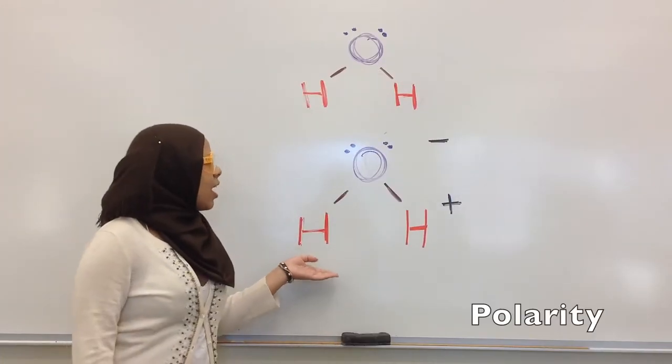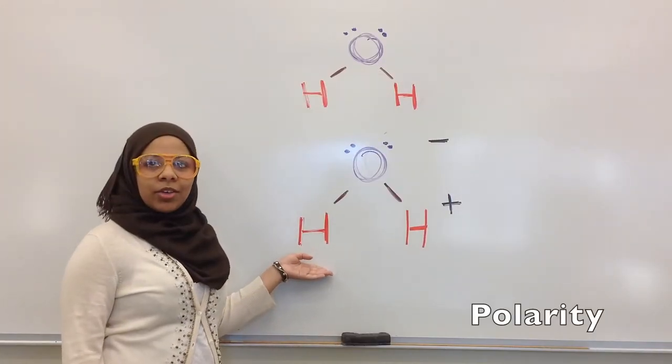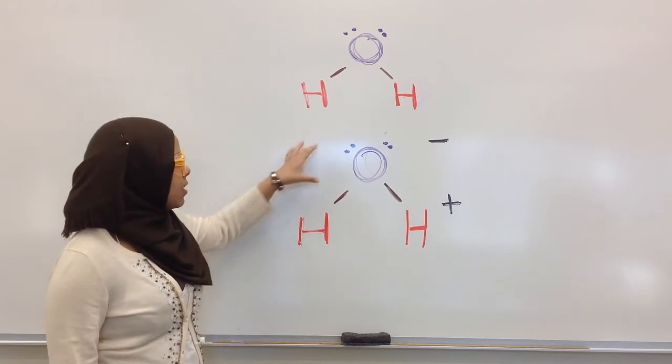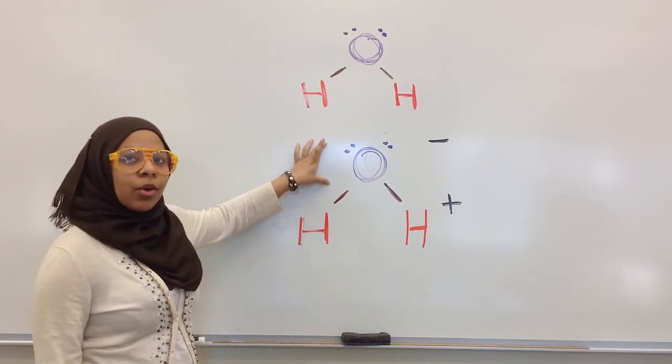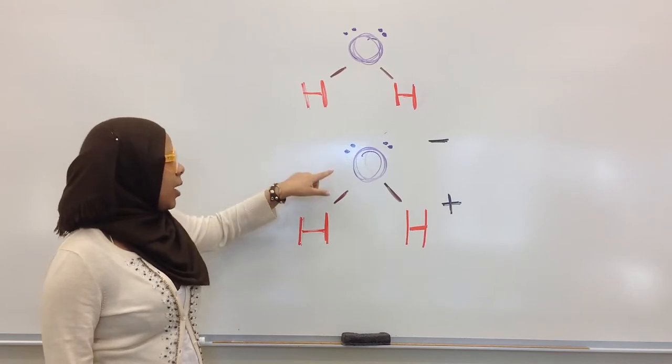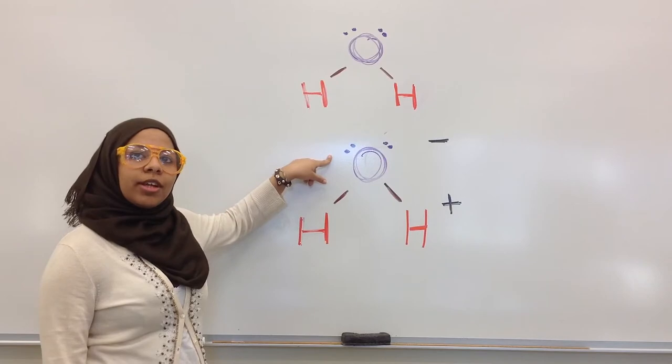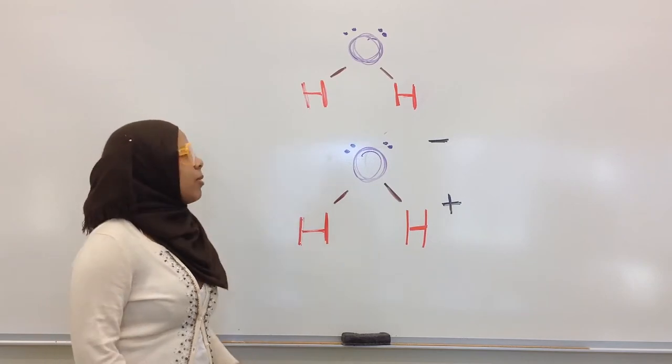Here we have a diagram of a water molecule. Water molecules are polar because this side of the molecule is more negative than this side. The oxygen molecule has more electrons, which makes it more negative, and that's why the molecule is polar.